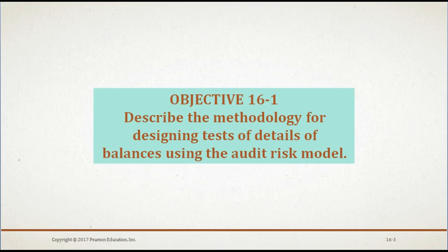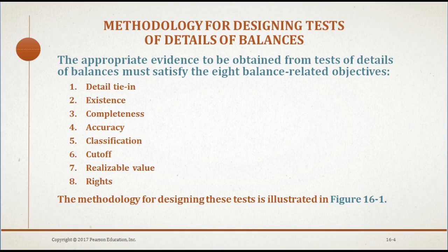We will begin the chapter discussion by describing the methodology for designing tests of details of balances using the audit risk model. In order to obtain appropriate evidence from tests of details of balances, the auditor must satisfy the eight balance-related objectives: detailed tie-in, existence, completeness, accuracy, classification, cutoff, realizable value, and the client's rights to accounts receivable.